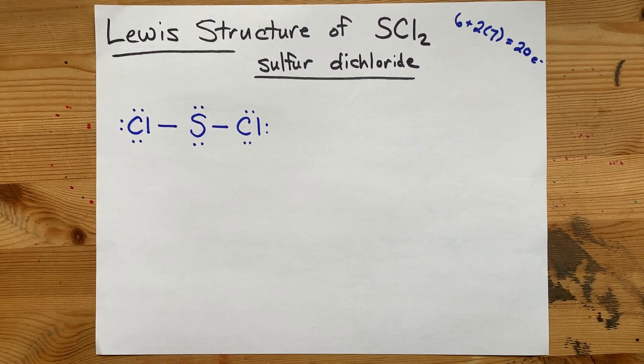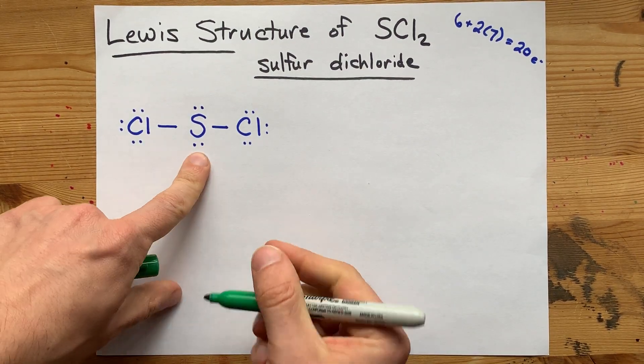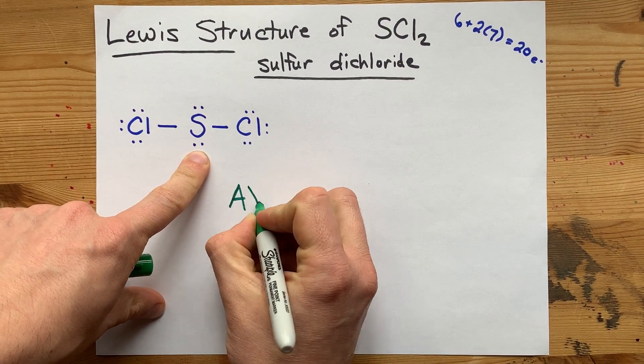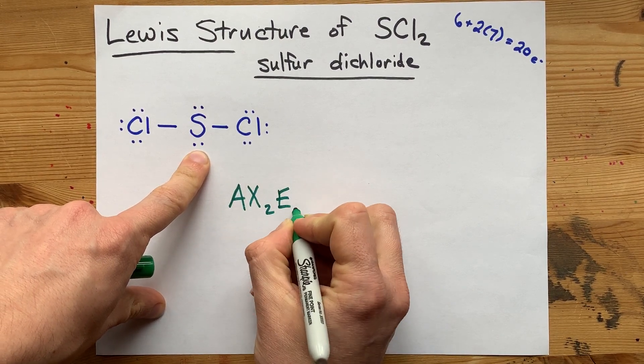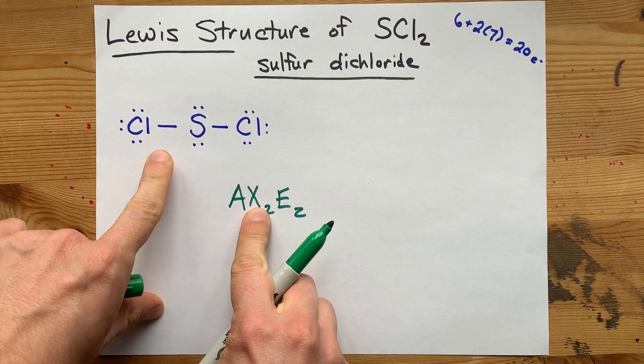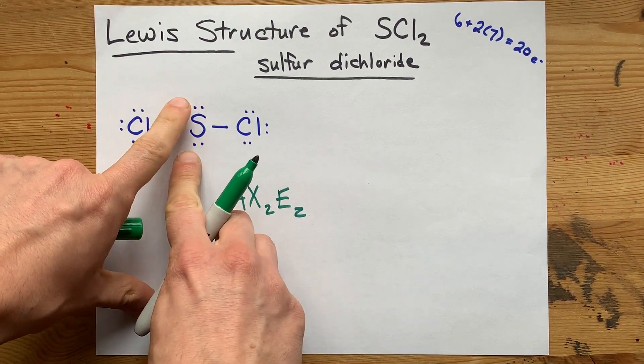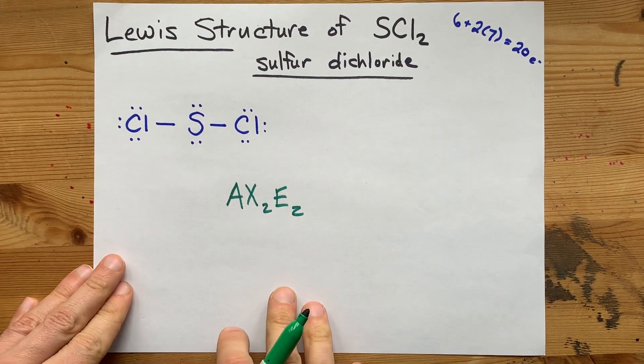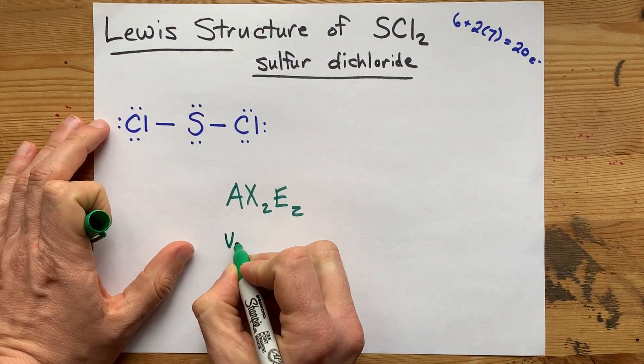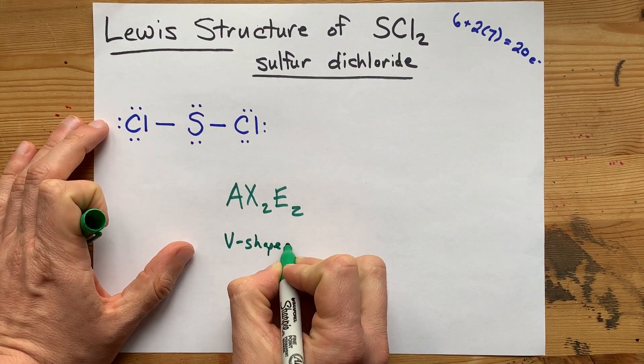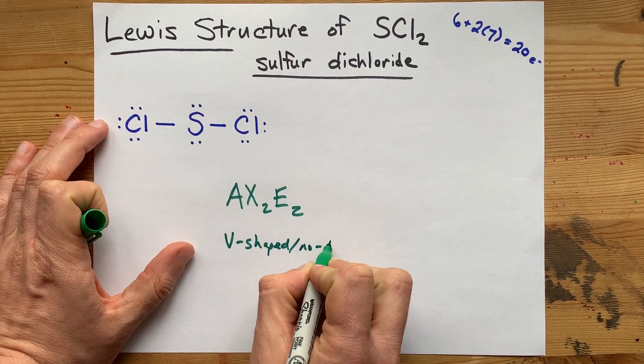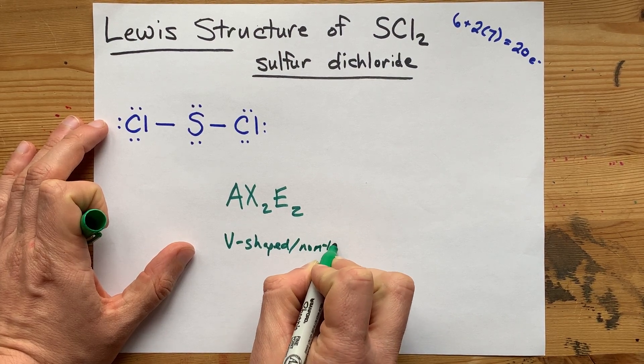If you're looking for extra information about this, the VSEPR notation is AX2E2, because you have two atoms bonded to the sulfur and two lone pairs on the sulfur as well. That gives it a either V-shaped or nonlinear or bent shape.